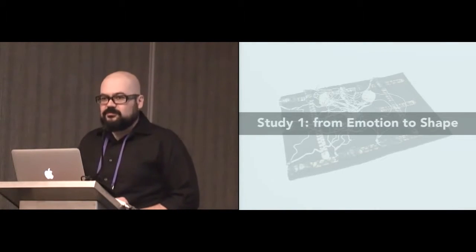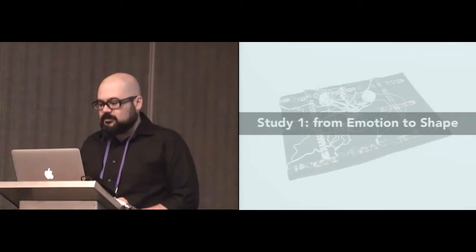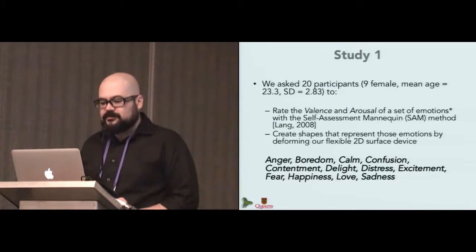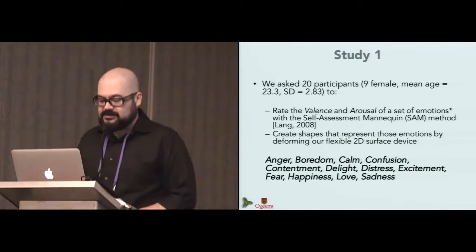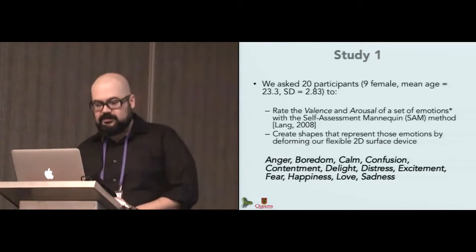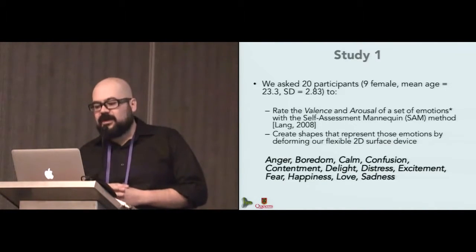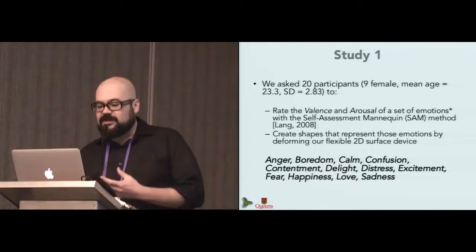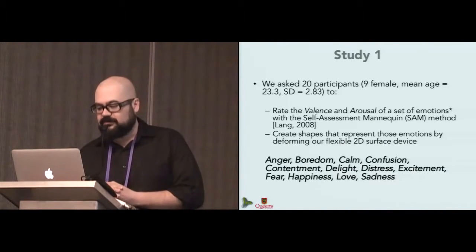So we conducted two studies to explore the link between the motion and shape in a 2D surface substrate. We started by recruiting 20 participants, nine of them were female, their mean age was 23.3 years, and we asked them to rate the valence and arousal of a set of emotions. We used a standard method for this, which is called the self-assessment mannequin method, and we also asked them to create shapes that represented those emotions by deforming a 2D flexible surface device.